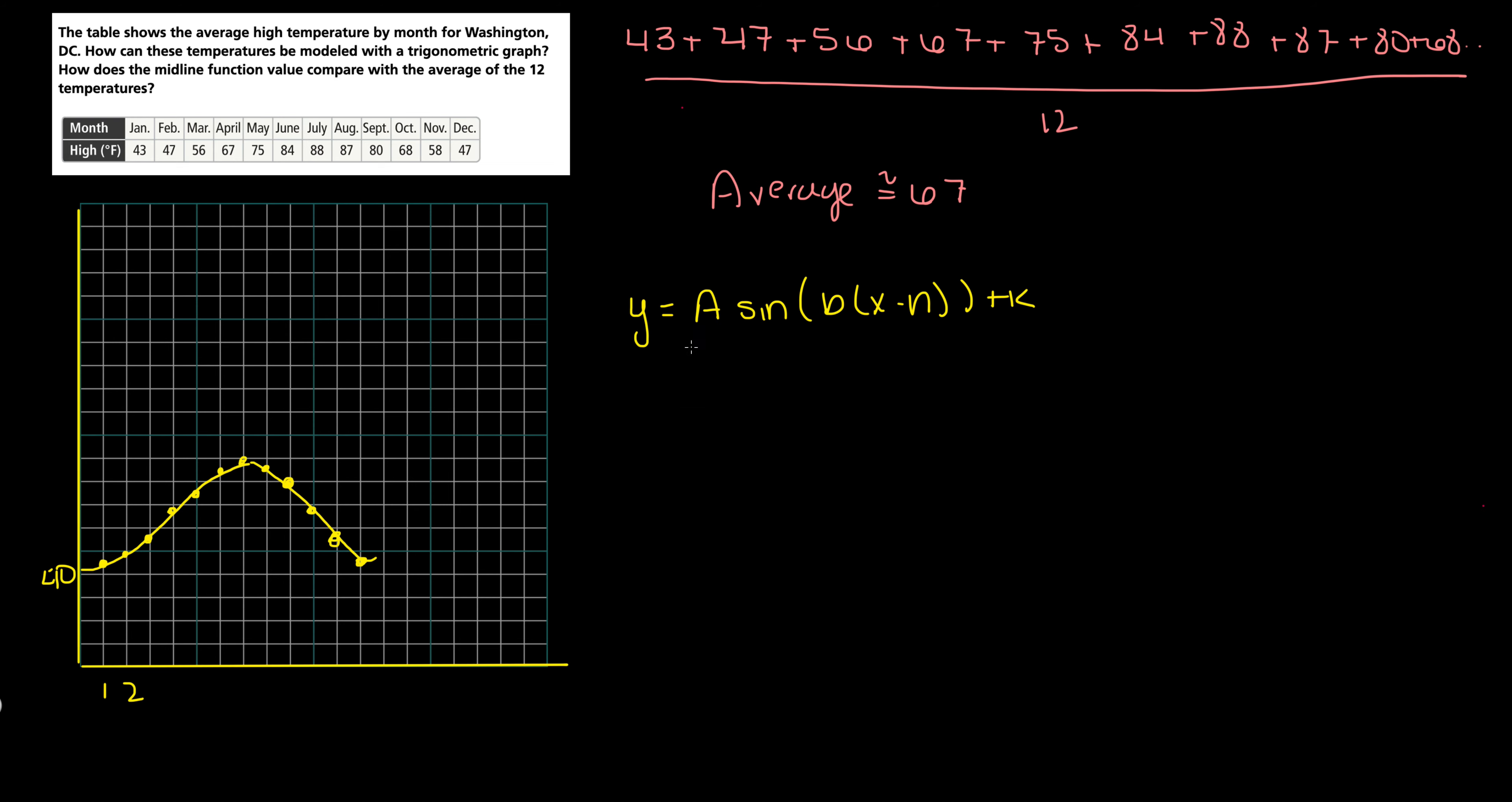Alright, so my amplitude is going to equal my max minus my min divided by 2. My max in this case is going to be 88 minus my min which is 43 divided by 2, which is going to be 22.5.